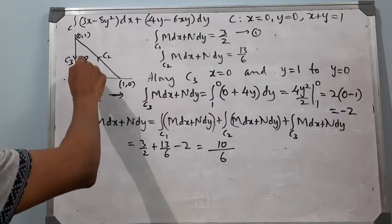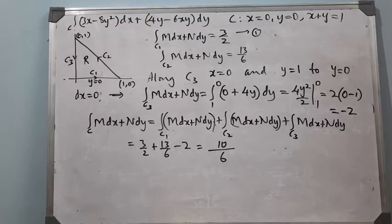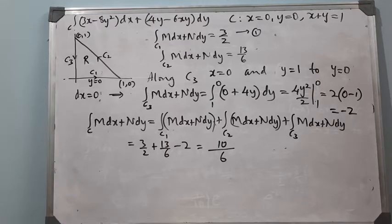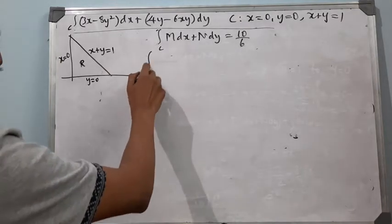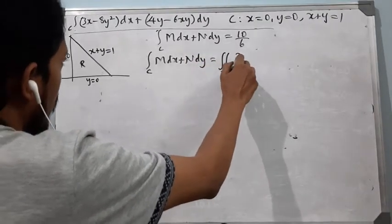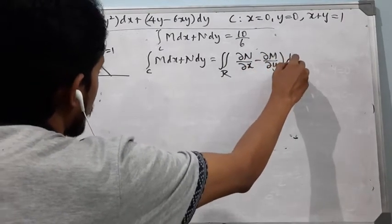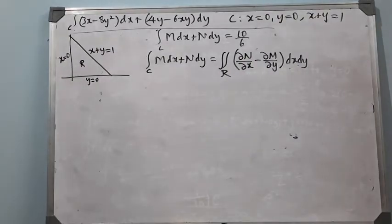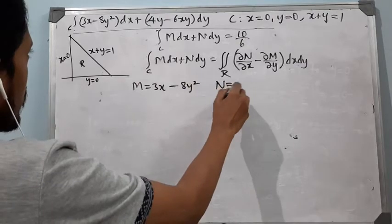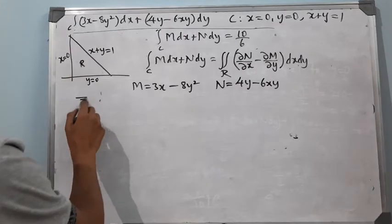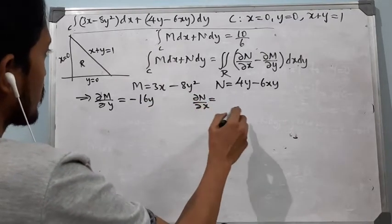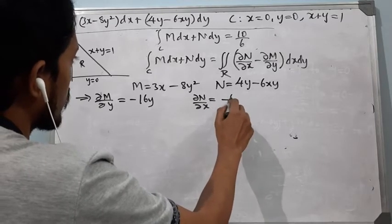Now we evaluate the right-hand side of Green's theorem. According to Green's theorem, the integral along C of M dx + N dy equals the double integral over R of (∂N/∂x − ∂M/∂y) dx dy. Here M = 3x − 8y², so ∂M/∂y = −16y. And N = 4y − 6xy, so ∂N/∂x = −6y.